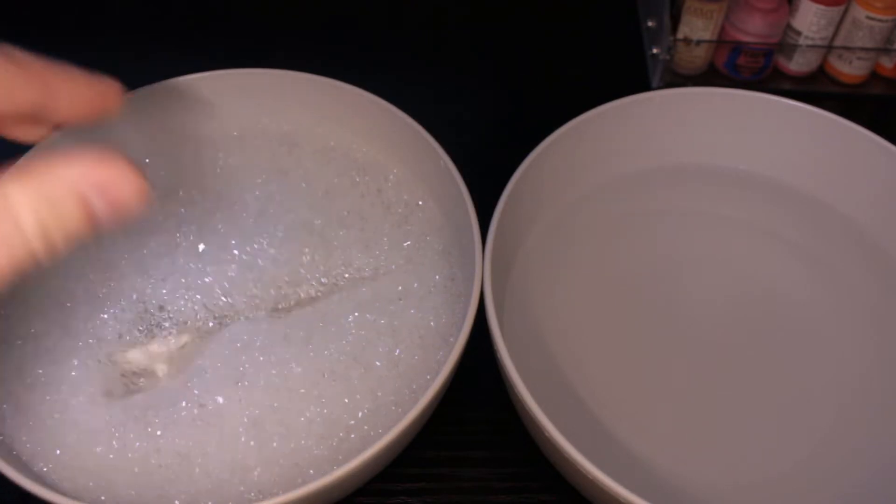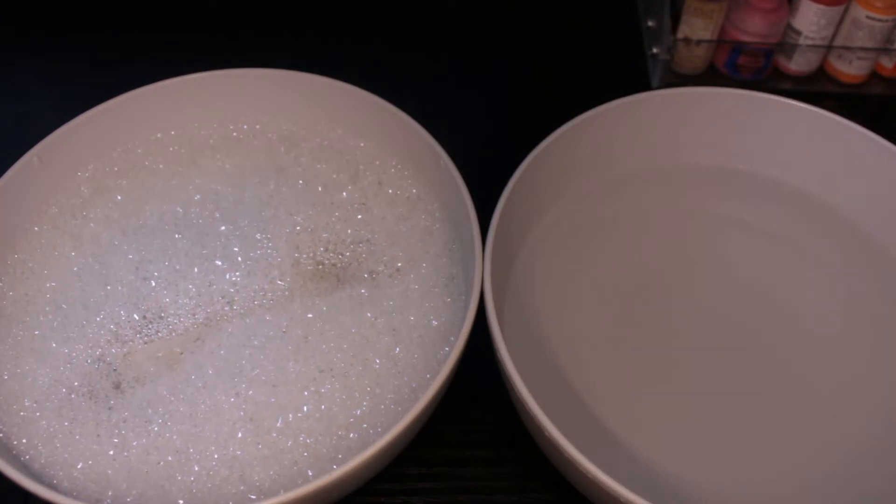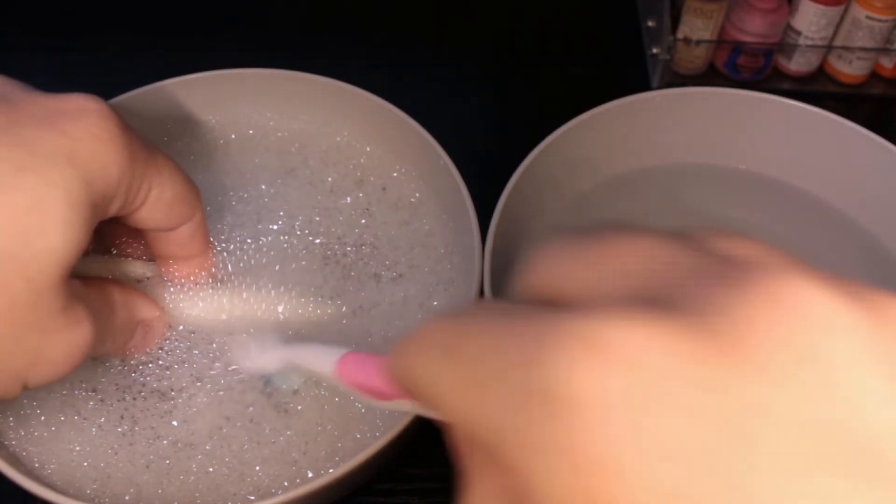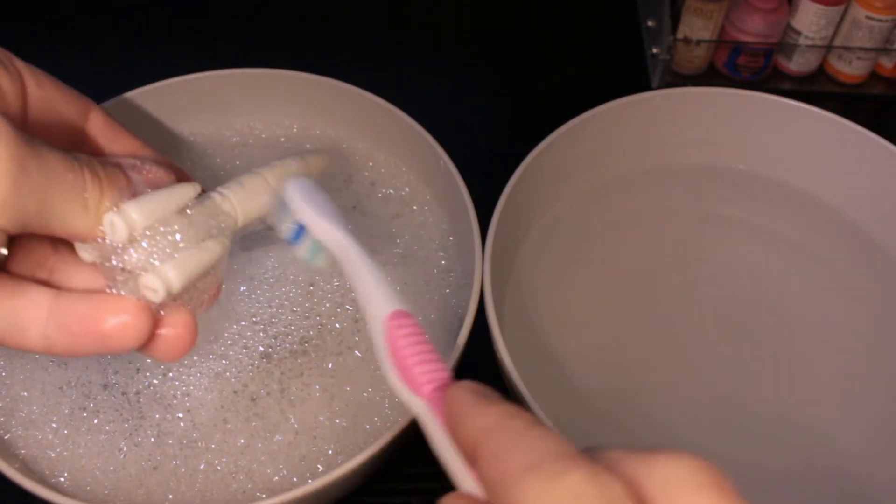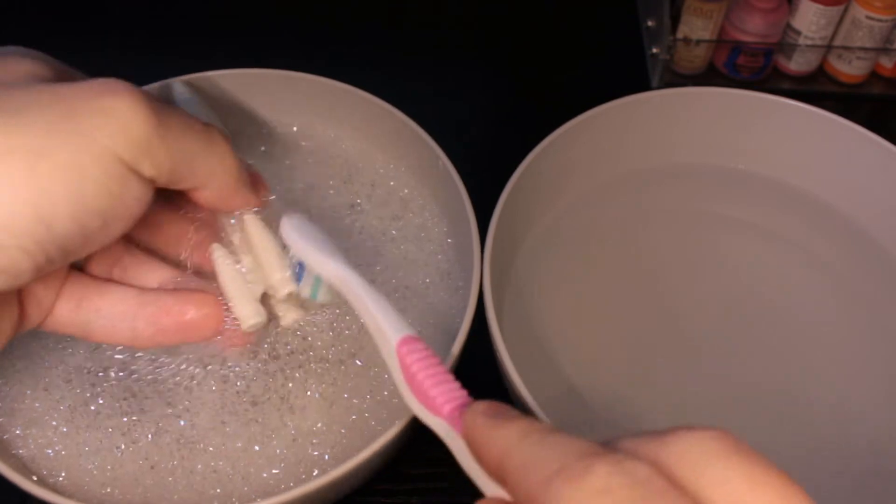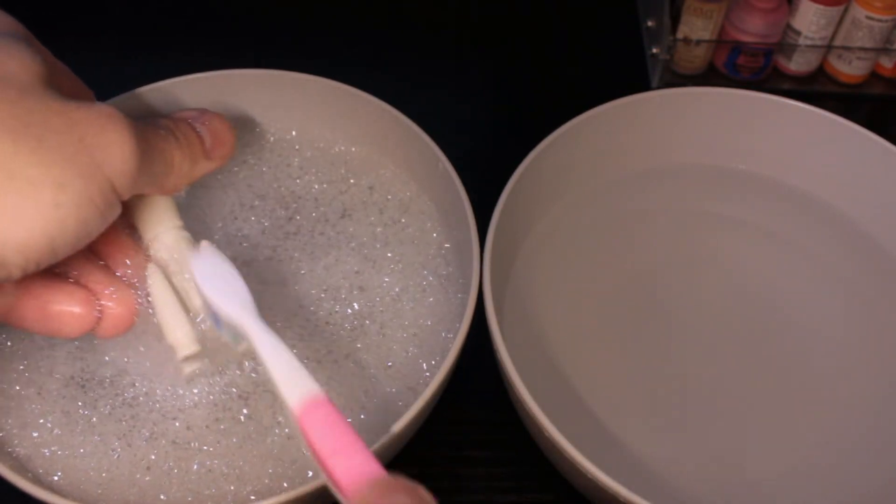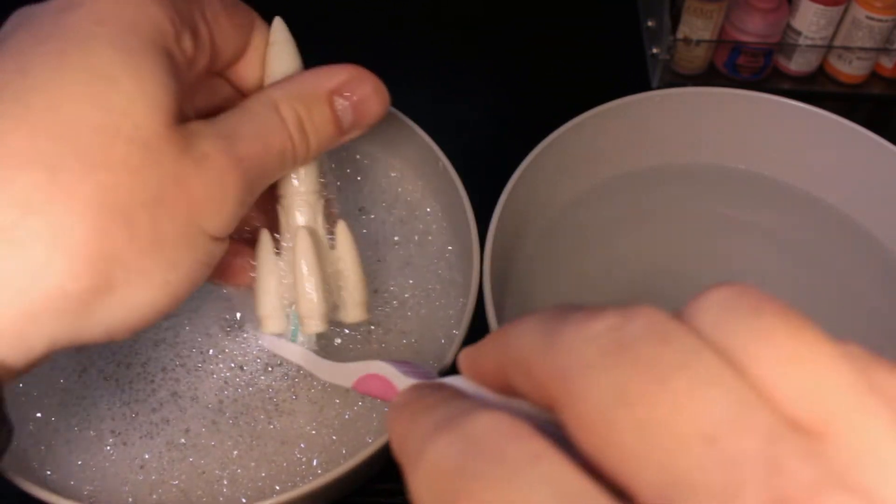Alright, so first things first, these are resin, not plastic miniatures, which means they can have release agent still on them, so you should wash them. This is honestly my first time washing a miniature. I never do it, I always just paint it, my primer sticks on, my paint sticks on fine, I haven't had an issue. But here's how you would do it, or at least here's how I would do it. You just get some soapy water, some regular dish soap, and you brush it with a brush, and then you rinse it off.